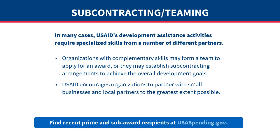You will also find recent prime and sub-award recipients at USAspending.gov. Click on Award Search in the top menu and select Keyword Search. Enter USAID in the search box to see award types, amounts, and recipient organizations.